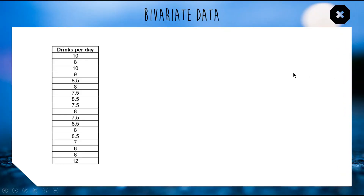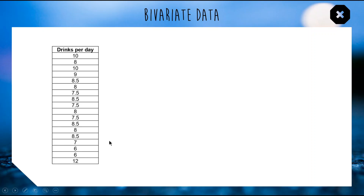We're starting off with some data that I recorded over an 18-day period — I recorded the number of times I had a drink of water in any specific day. On the first day I had 10 drinks of water, on the fifth day I had 8.5 — tried to round to the nearest half glass to keep it simple. Now, what I've recorded is called univariate data: I've only recorded one thing, one variable, and it's not very interesting.